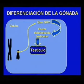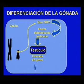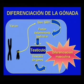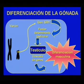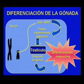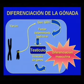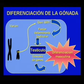La diferenciación sexual hacia el sexo masculino se debe a que el cromosoma Y tiene en su brazo corto la región determinante del sexo, y en ella se encuentra el gen SRY que codifica para el factor determinante testicular, que hace que la gónada indiferenciada se diferencie en testículo. A partir de ahí se activa una cascada de genes que permiten la diferenciación masculina de los genitales internos y externos. En ausencia del cromosoma Y, no existe el gen del factor determinante testicular, por lo que no se diferencia el testículo y el resto de los genitales internos y externos se diferencian hacia el sexo femenino.